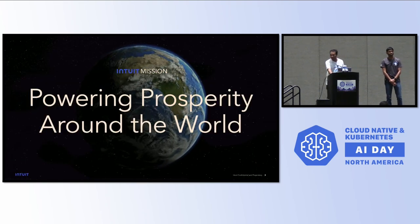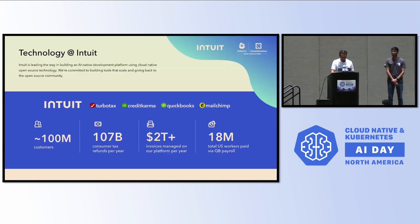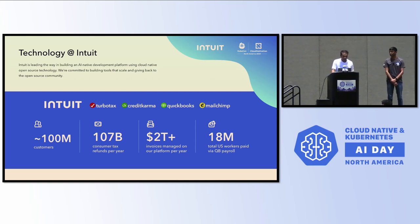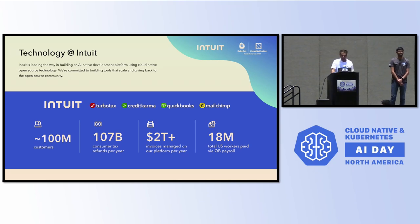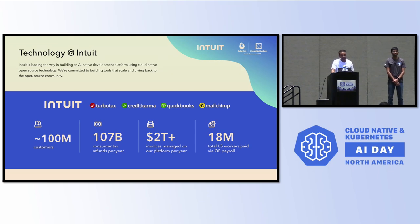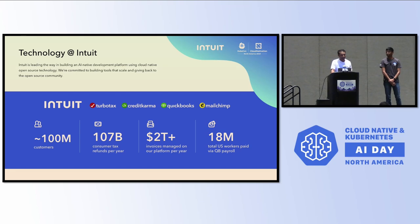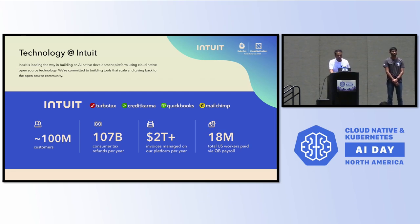This is the Intuit mission — powering prosperity around the world. We have about 100 million customers. We move billions — 100 plus billion in revenue in customer tax. We have trillions of dollars moved around in invoicing and 18 million plus users in payroll. This talks about the scale and the solutions we put in to make sure that we are always highly available and reliable.